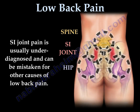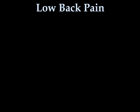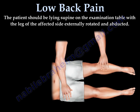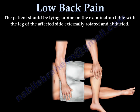SI joint pain is usually underdiagnosed and can be mistaken for other causes of low back pain. The FABER test is helpful but not specific in determining the presence of SI joint problems. The patient should be lying supine on the examination table with the leg of the affected side externally rotated and abducted.